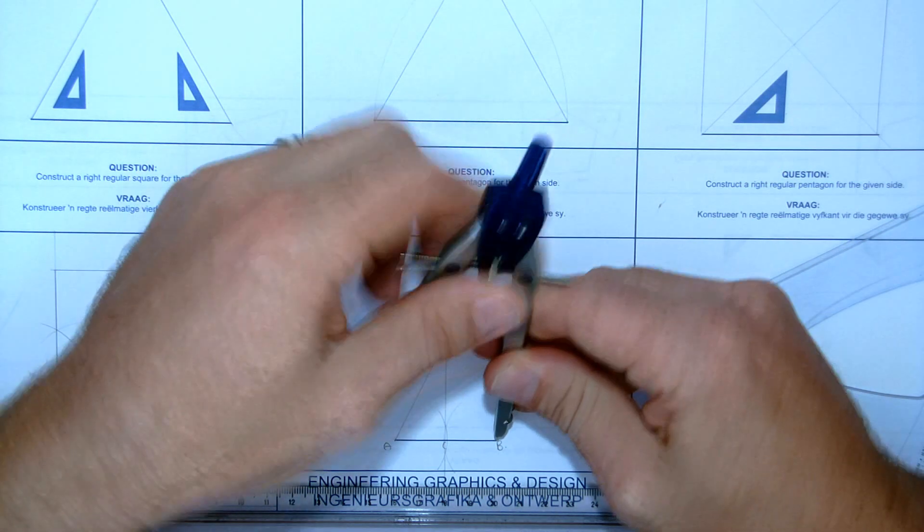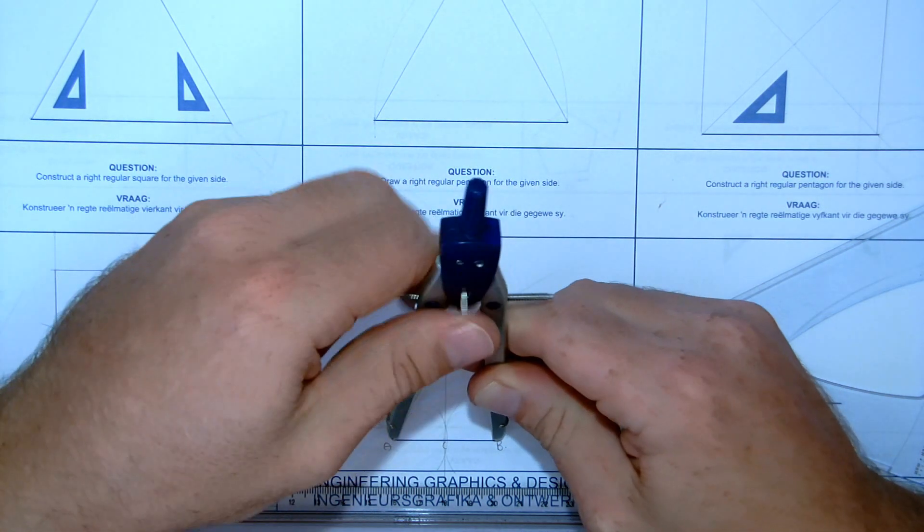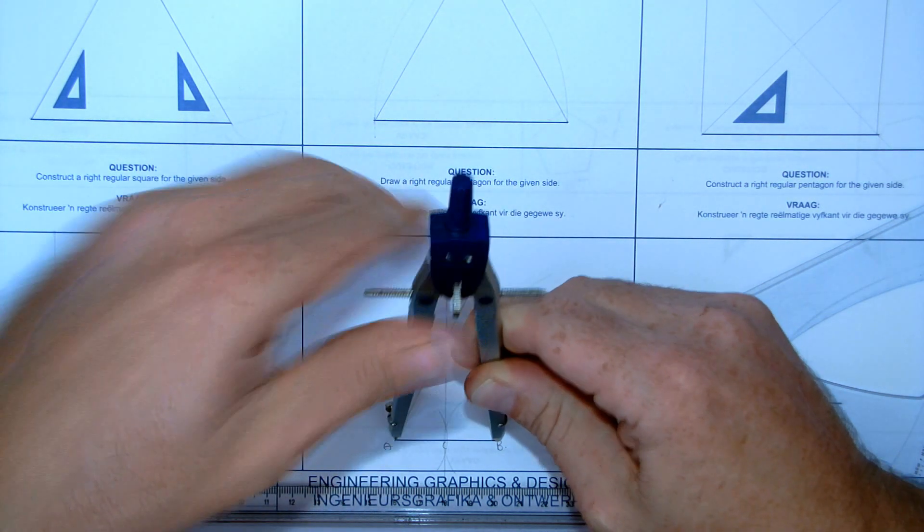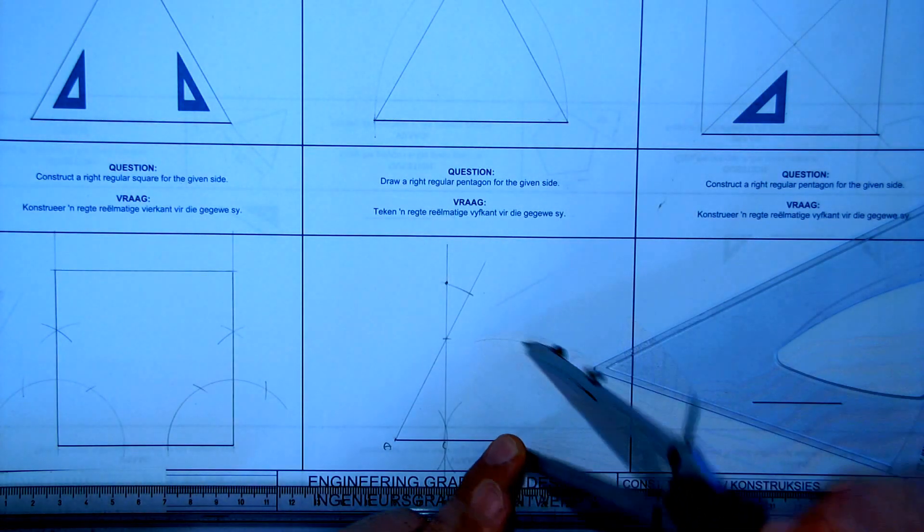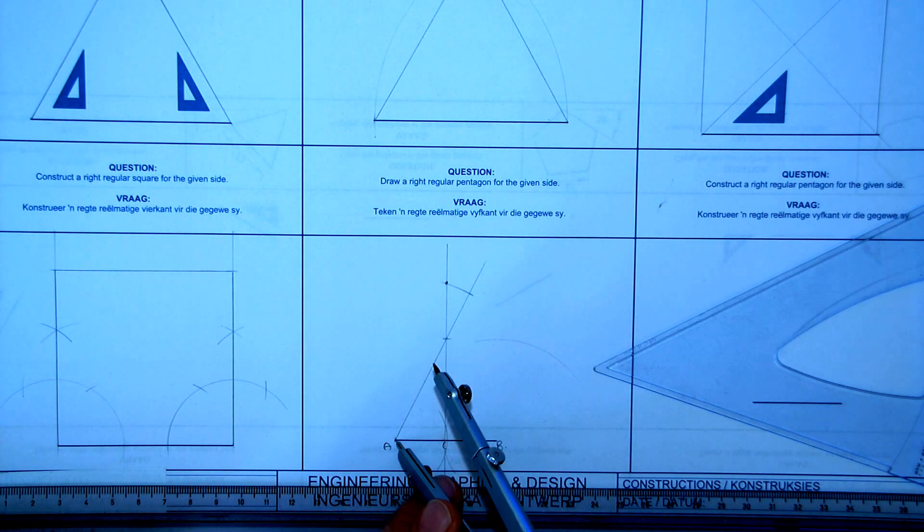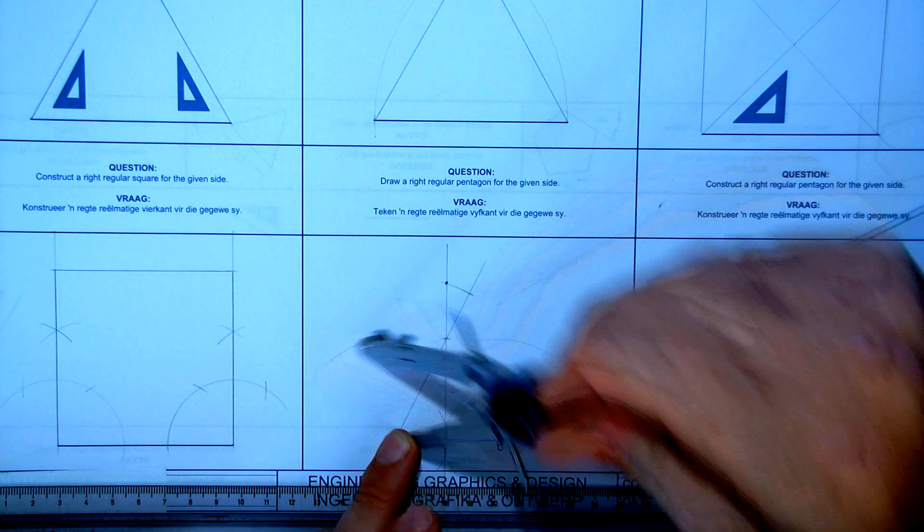So, I am going to take A, B. Okay, I am going to take A, B. Now, I am going to make an arc. From B, I am going to make an arc. And from A, I am going to make an arc somewhere. Just draw a random arc.